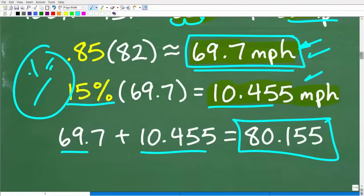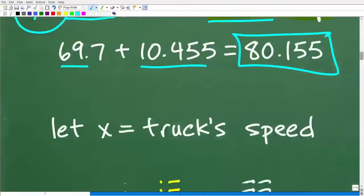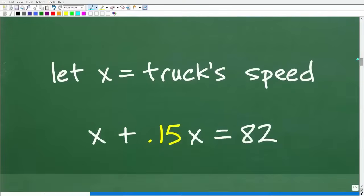Well, we're going to have to use our friend algebra. So what I'm going to do is I'm going to say, what are we looking for? Well, we're looking for the truck's speed. We don't know what the truck's speed is. So when you don't know a value of something, let's use a variable to represent that value. So let's let X equal the truck's speed.